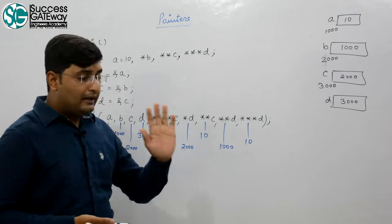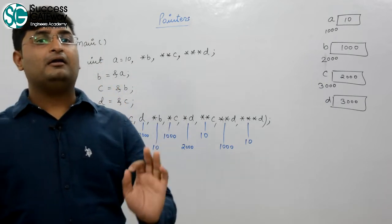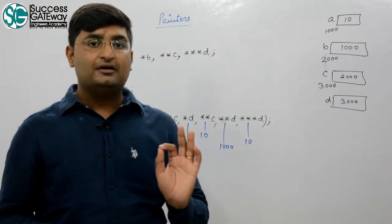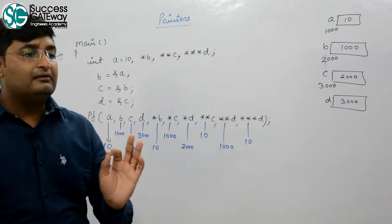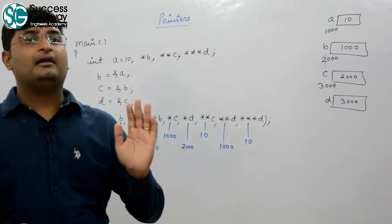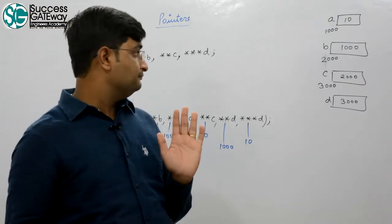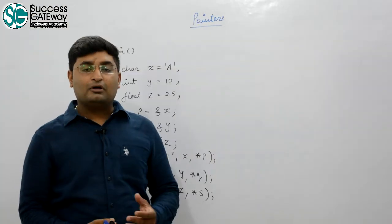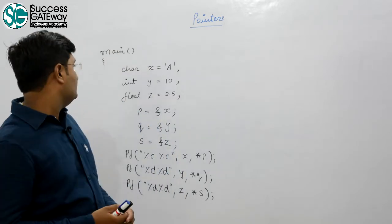Every C compiler should support at least 12 levels of pointers. Now let's move to the next question on pointers.